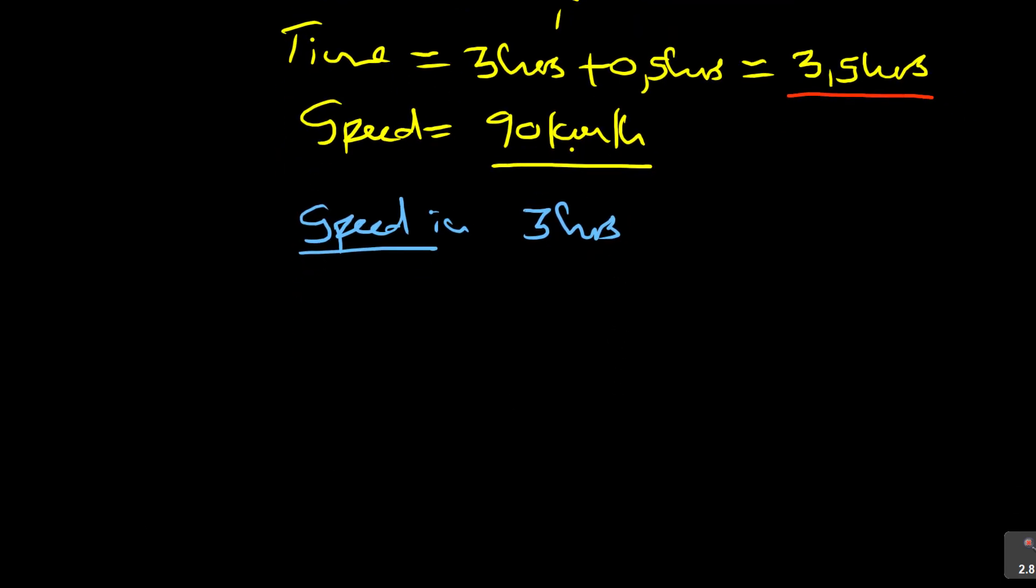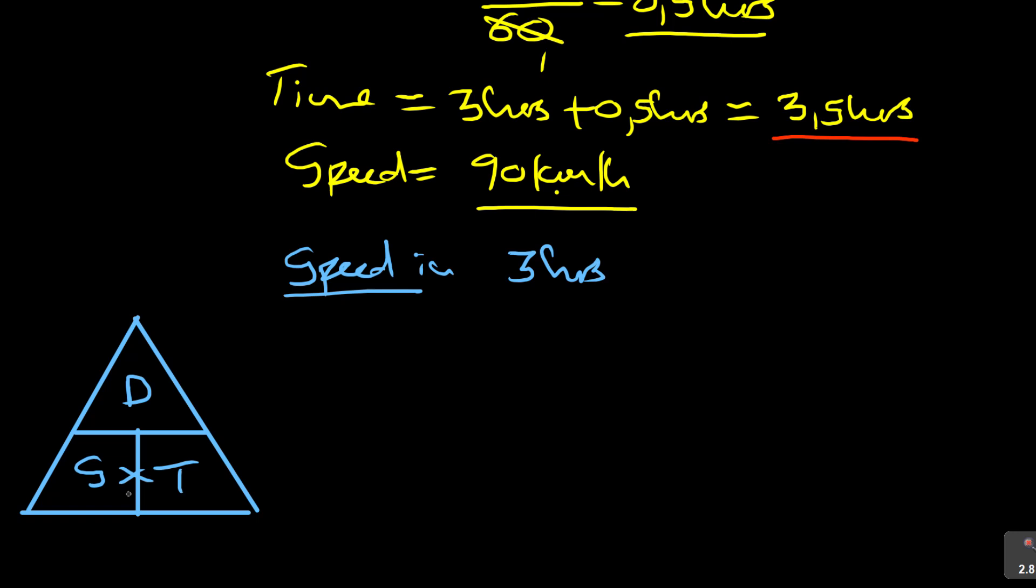Since we want speed, let's start with our triangle. When you're looking at the triangle here, it will actually give you what is missing. There is D there, there is S times T. They gave us time and speed, which means we are looking for distance first.